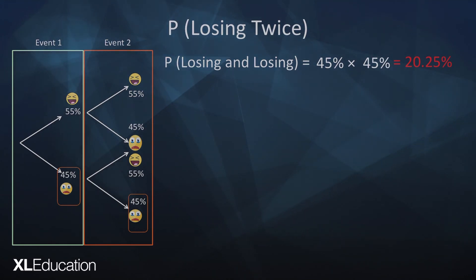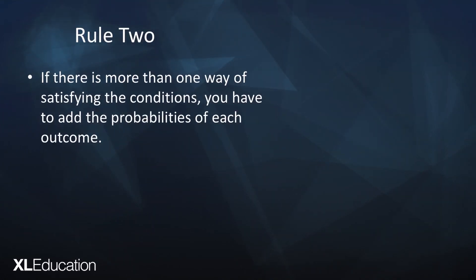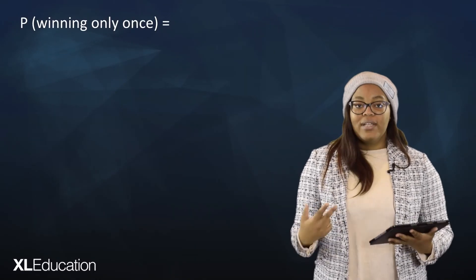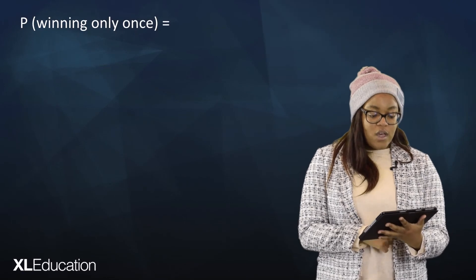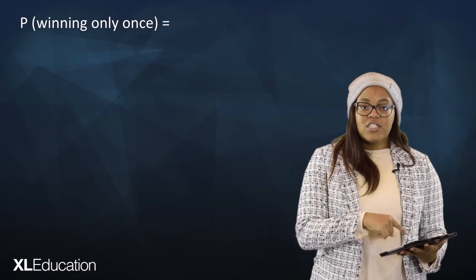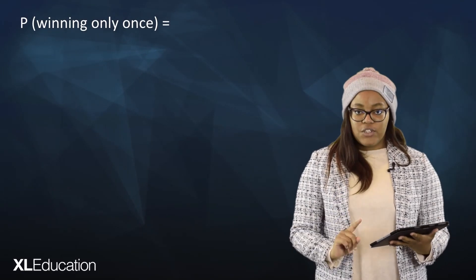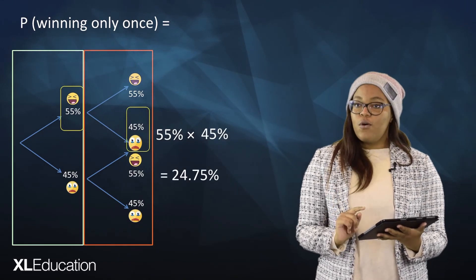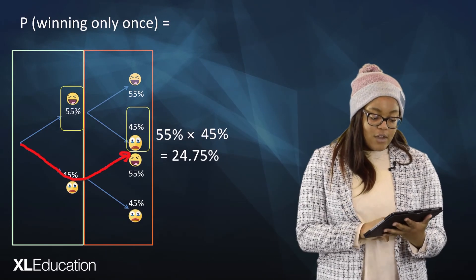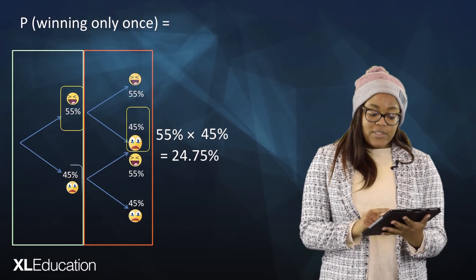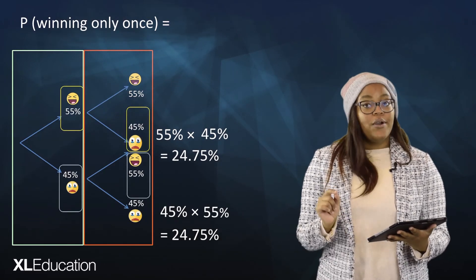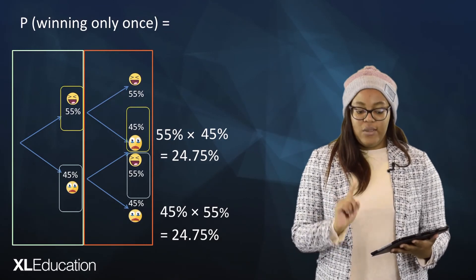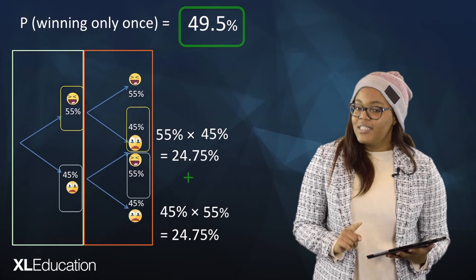Now that we've seen rule one, let's look at rule two: if there is more than one way of satisfying the conditions, you have to add the probabilities of each outcome. Let's say Amatle wants to know her chances of winning only one match. There are multiple paths that fulfill this requirement. The first is winning the first match and losing the second, giving 24.75 percent. The second is losing the first match and winning the second, also giving 24.75 percent. Adding those probabilities gives us 49.5 percent.